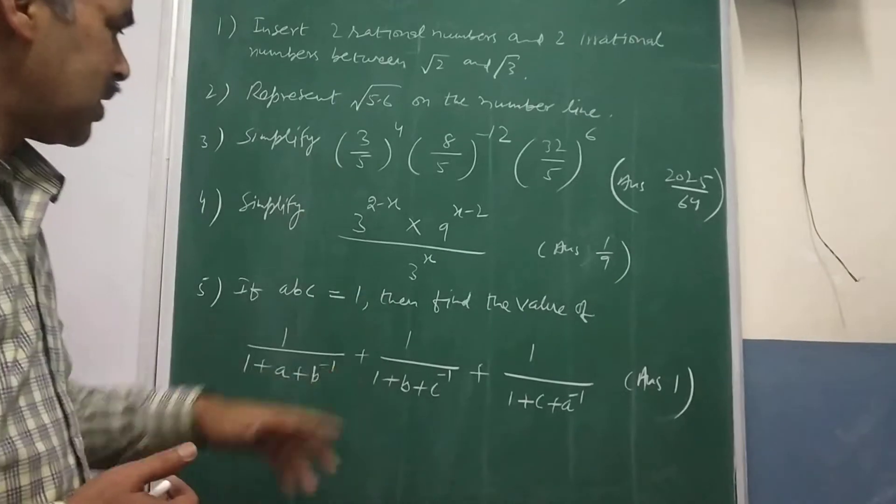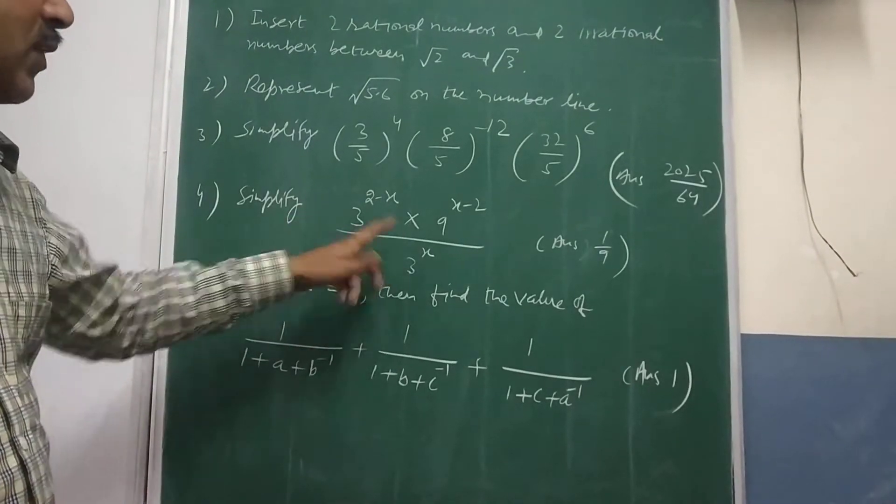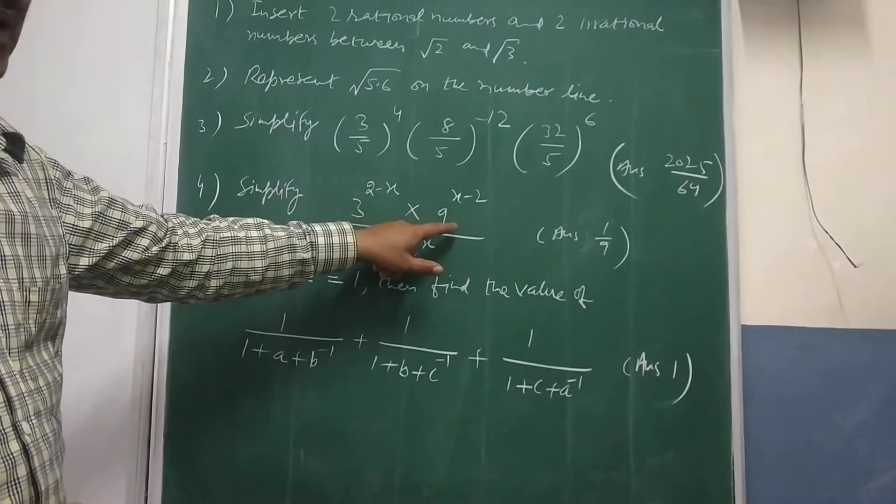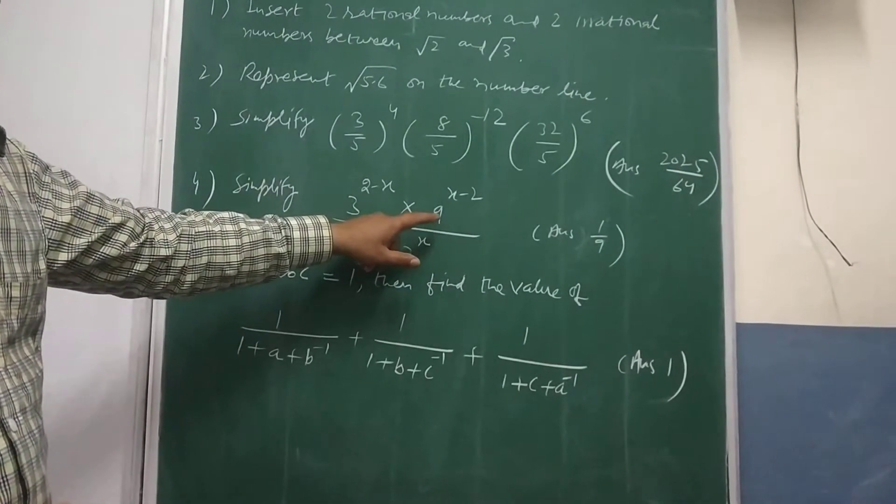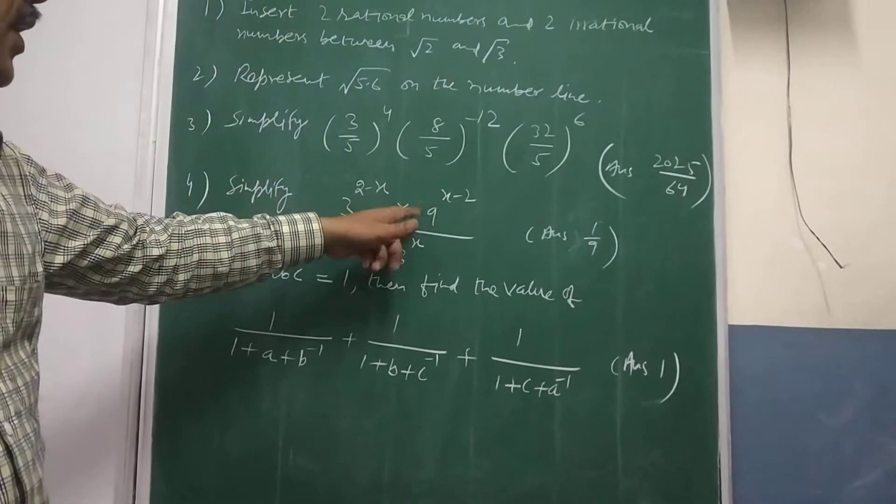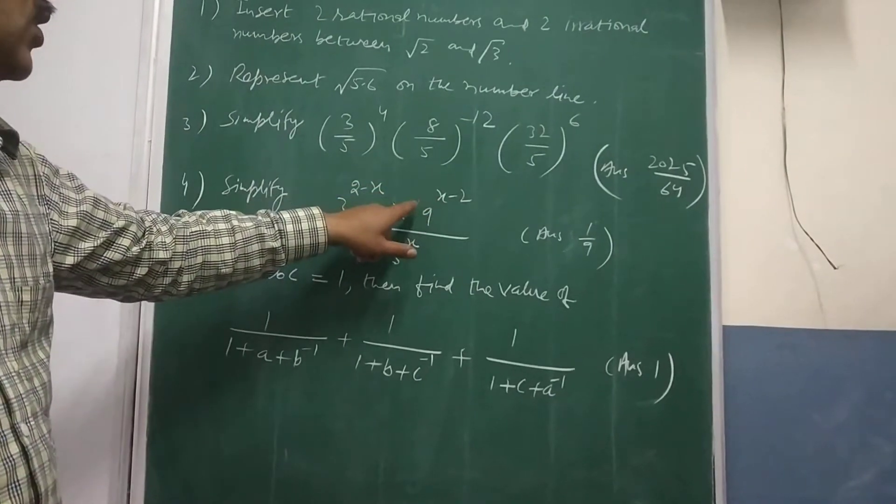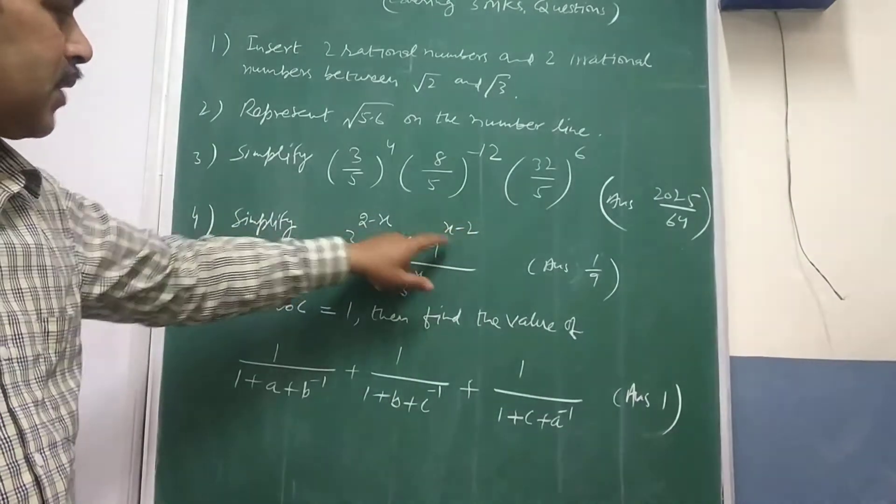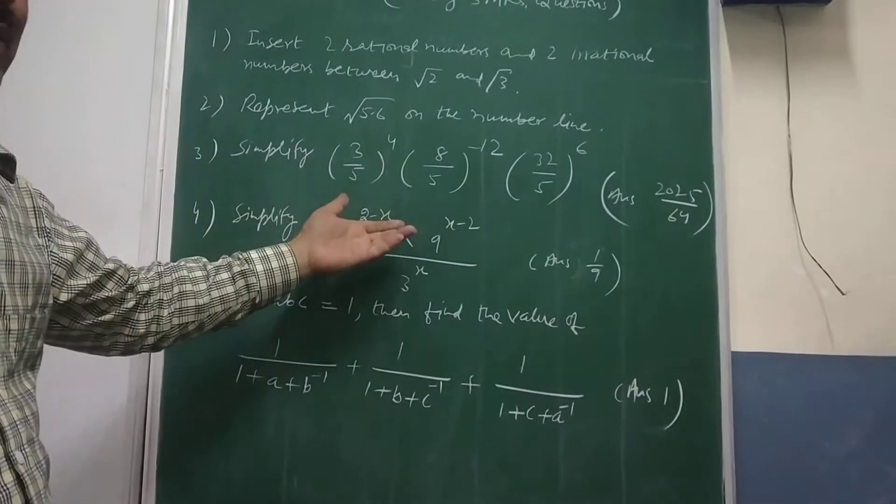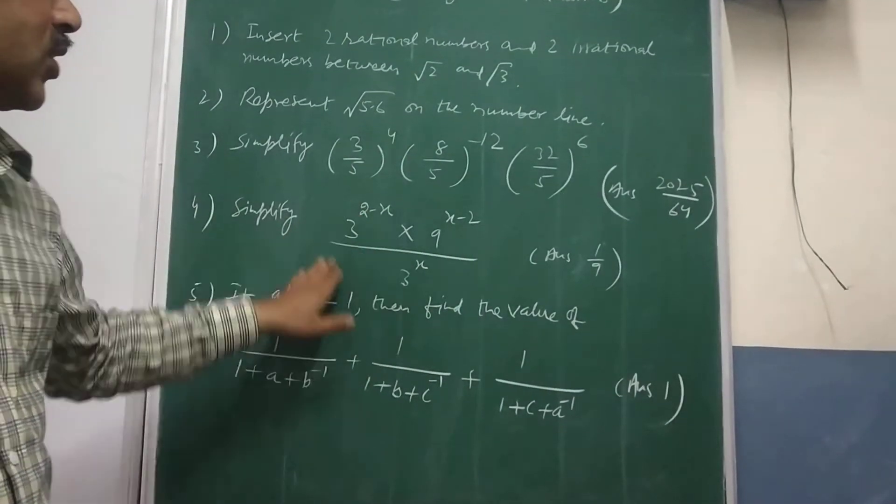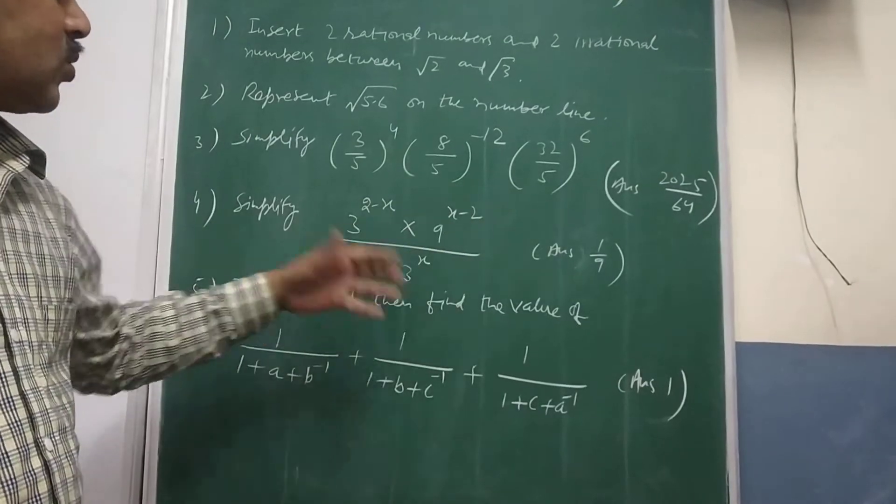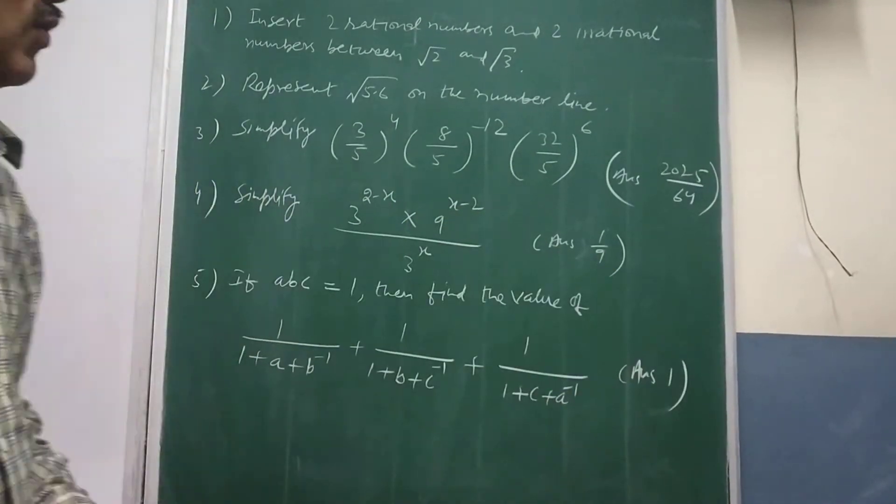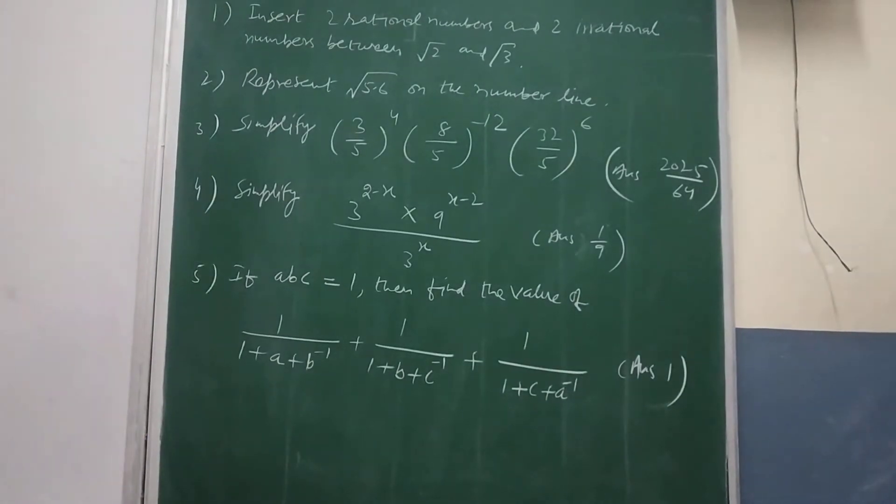Similarly next again is here it is 3. It is a prime number but this is not a prime number. So take the prime number. Prime factors of 9 are 3 into 3, 3 square. So when 3 square I will be writing 3^(2x-4) it will make it 2x - 4. Then bases are same. Again you add the powers. Again the bases 3 then subtract x from that. So you see x will go up somewhere and you are left with 1 upon 9 which is the answer for this question.